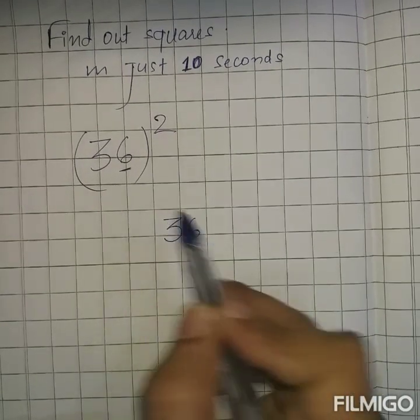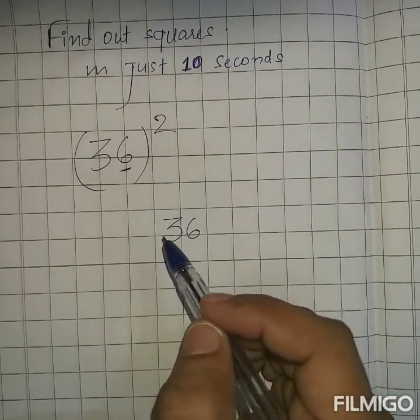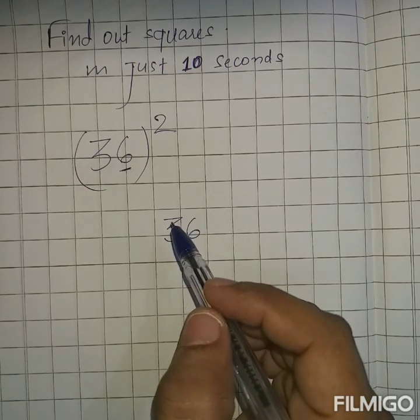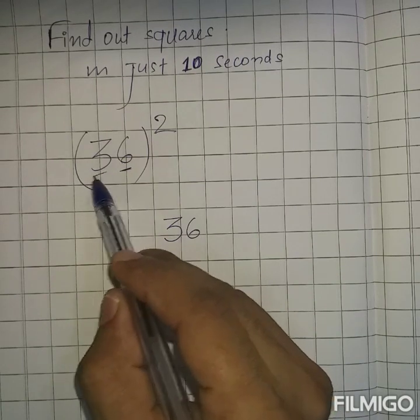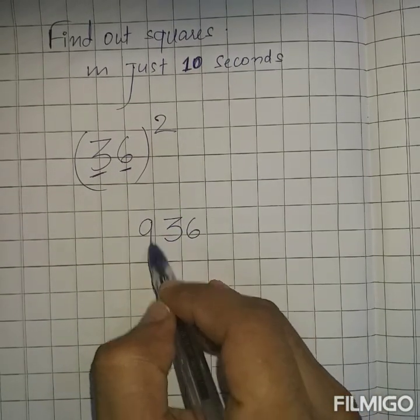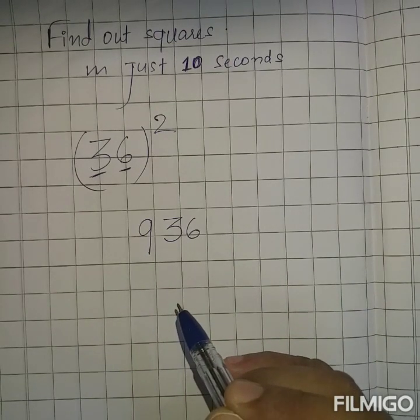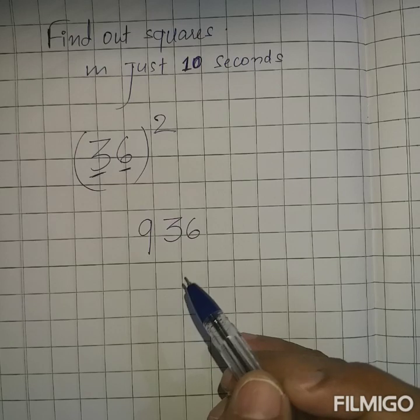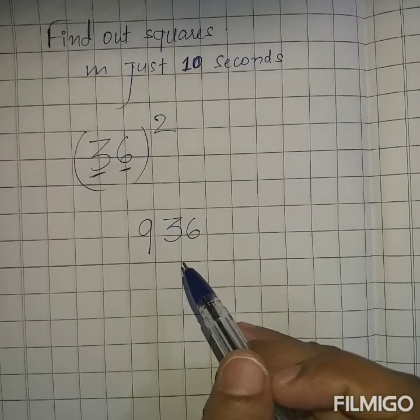Second step: write the square of the number that is present at tens place. Who's here? It's 3. So square of 3 is 9.